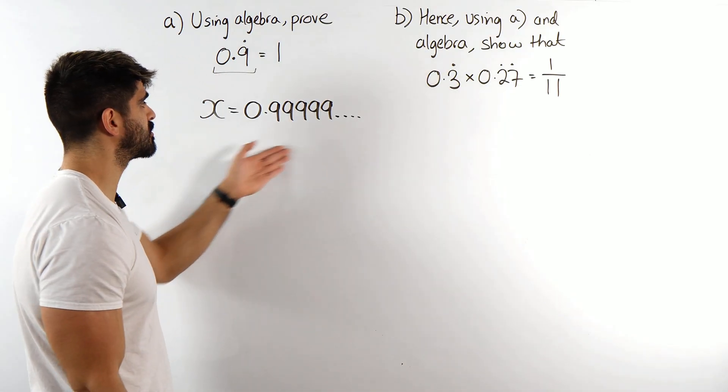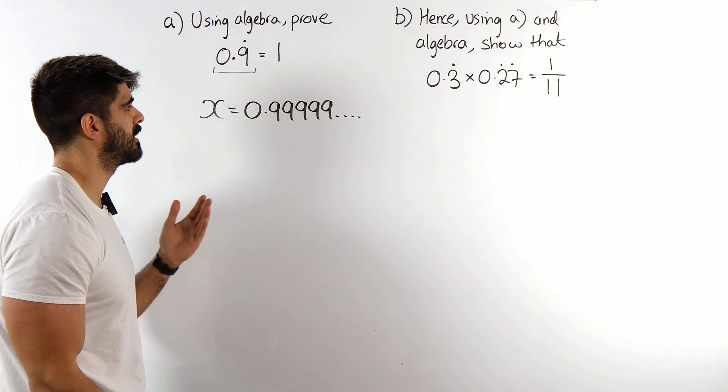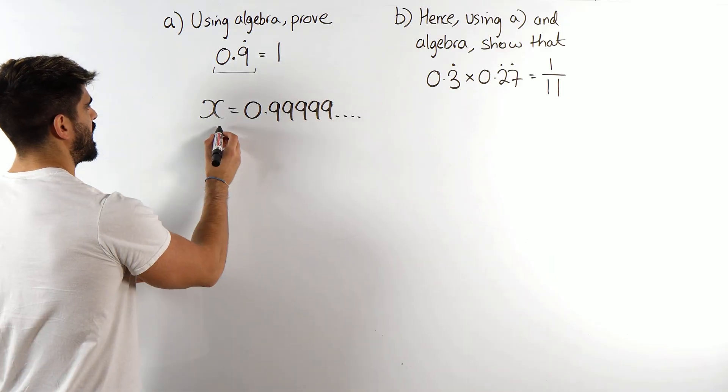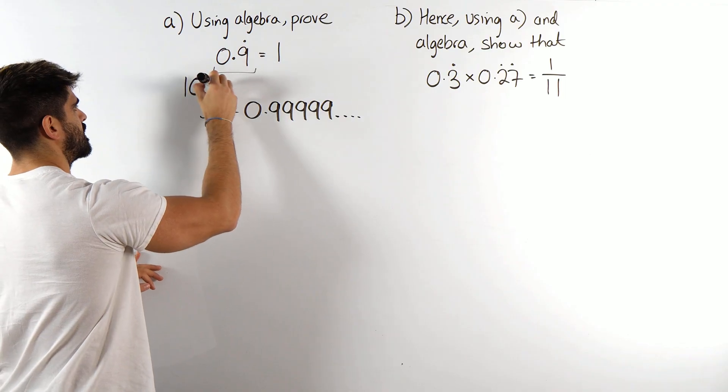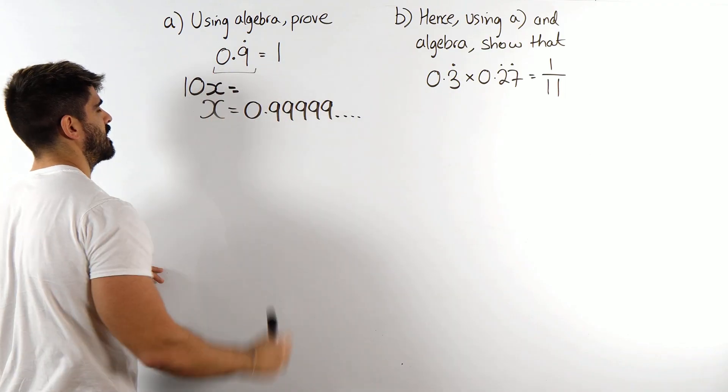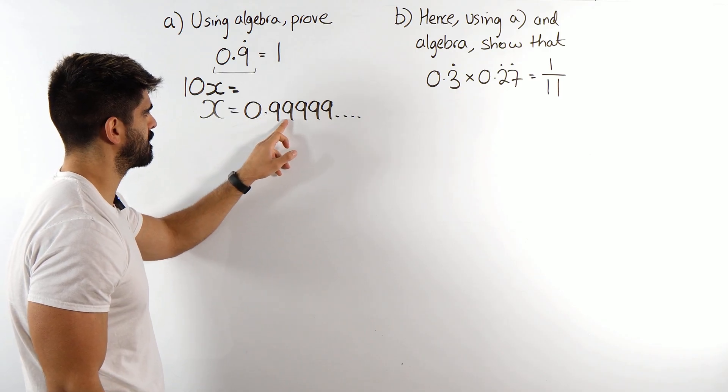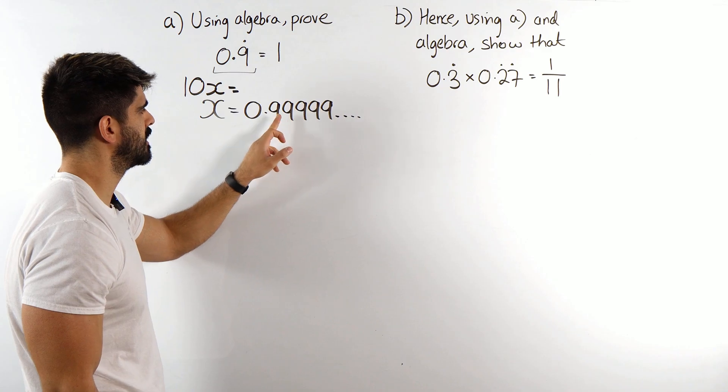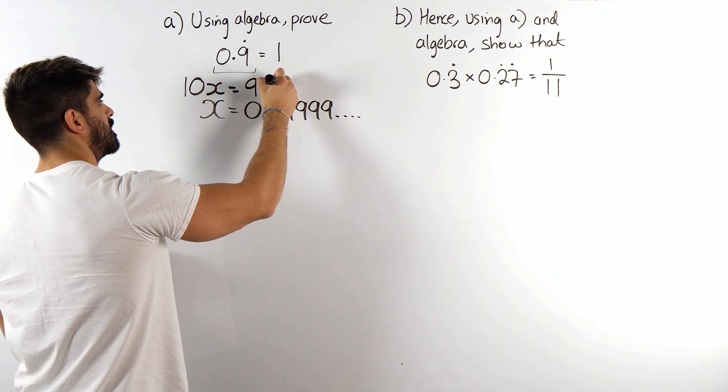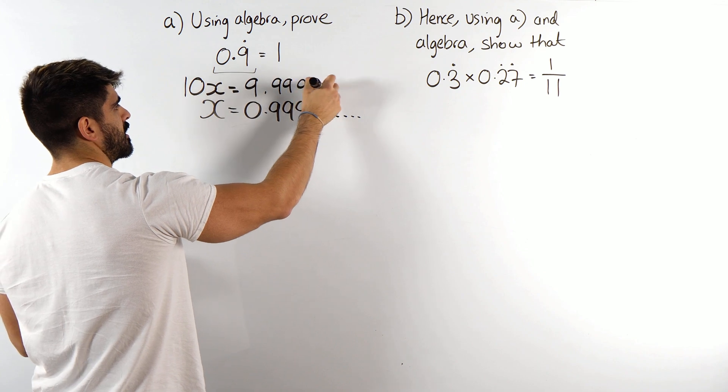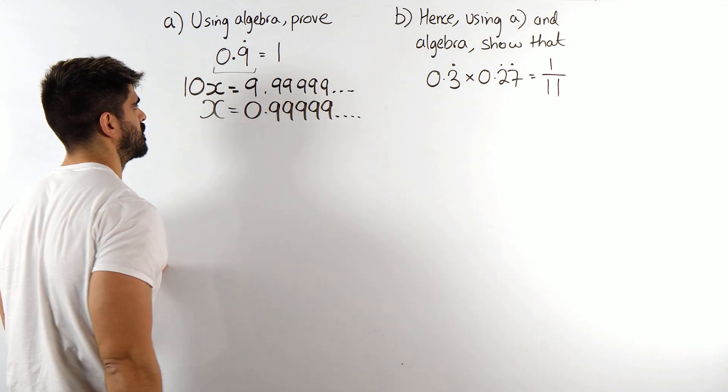So because one number is recurring I'm only going to times it by 10. So x times 10 is 10x, now when you times this by 10 the decimal place is going to move to the right by 1 so it becomes 9.9 recurring. The amount of 9's you write is totally up to you.